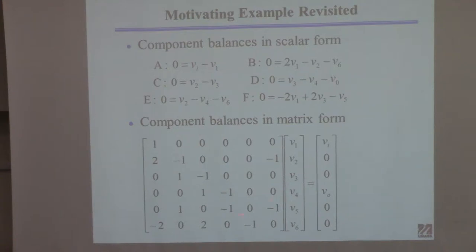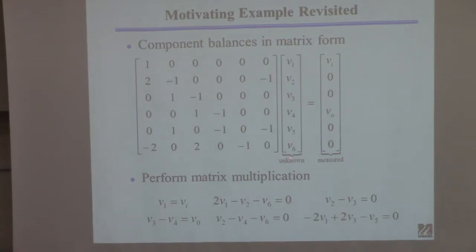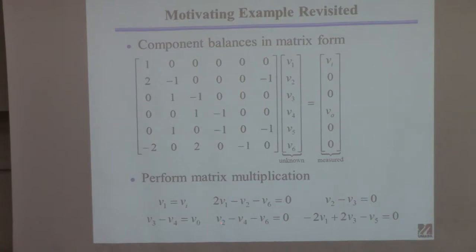This was just meant to be an example of what a matrix might look like. I've written out the same matrix: the unknowns on one side, the measured values on the other. If I multiply them out I get the equations back — but obviously you'd stop once you've set up the matrix correctly, confident that multiplying it out would recover the original equations.